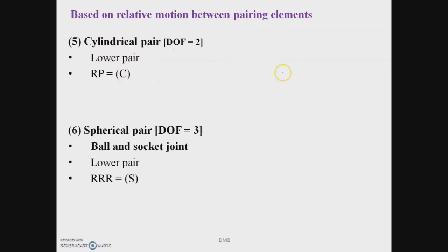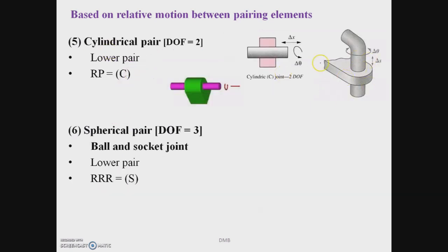A cylindrical pair (letter C) is formed by a shaft rotating inside a bearing. It has 2 degrees of freedom because the shaft can both slide and rotate inside the bearing, and these two motions — rotation and translation — are independent of each other. Cylindrical pair is an example of a lower pair due to surface contact.